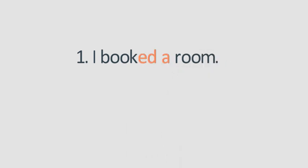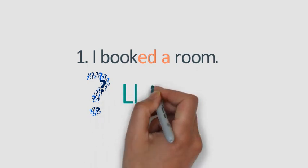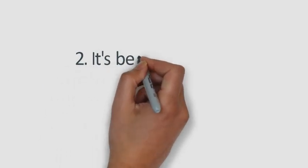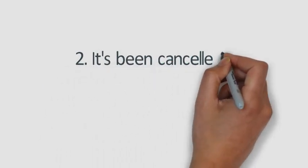Right — it's a case of linking. The final sound in 'booked' is pronounced with the article 'a': 'bookt-a.' 'I booked a room,' 'I booked a room,' 'I booked a room.' Number two: 'It's been cancelled,' 'it's been cancelled.' Ten seconds.